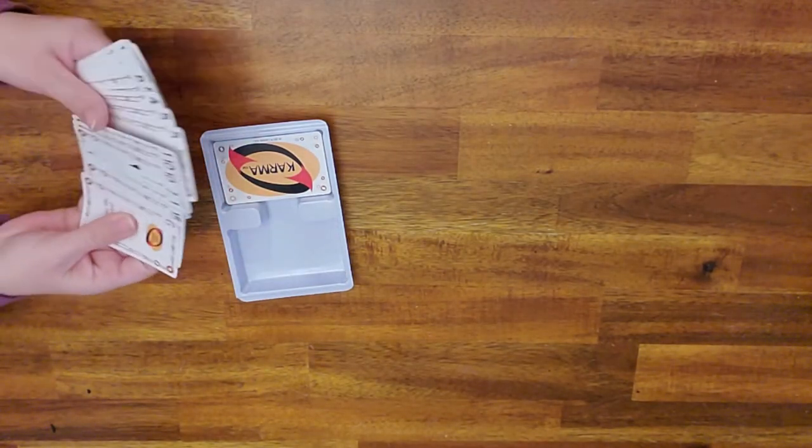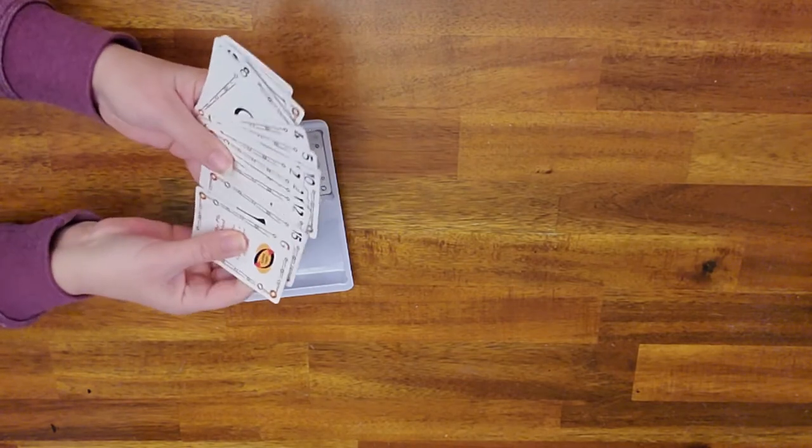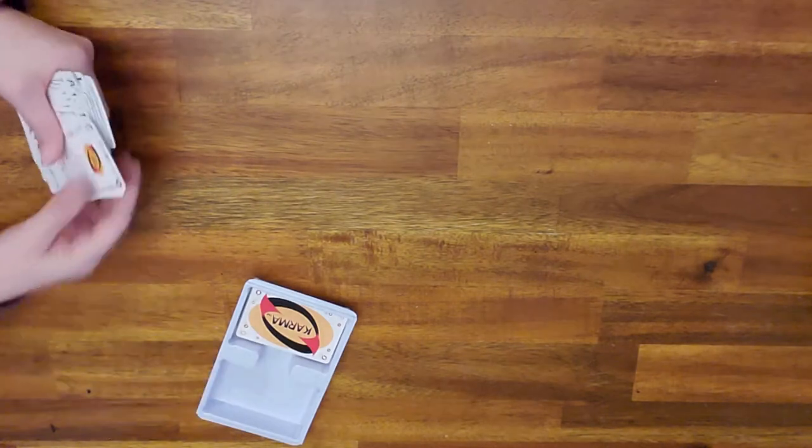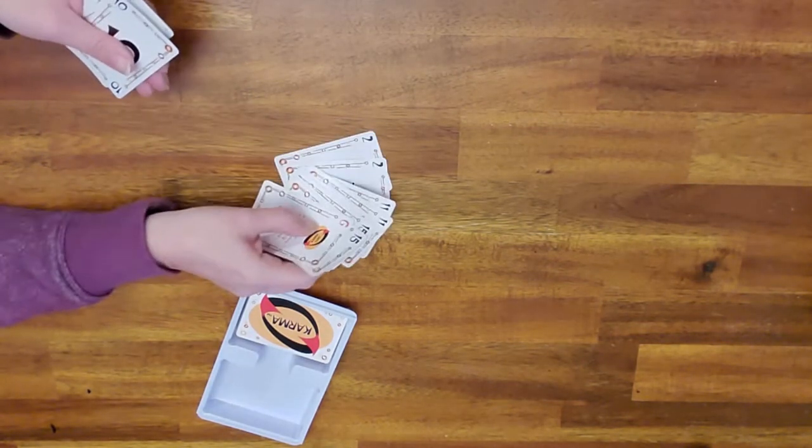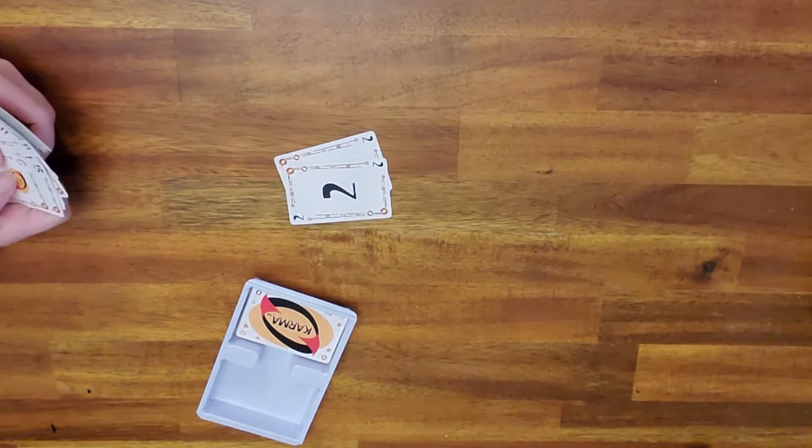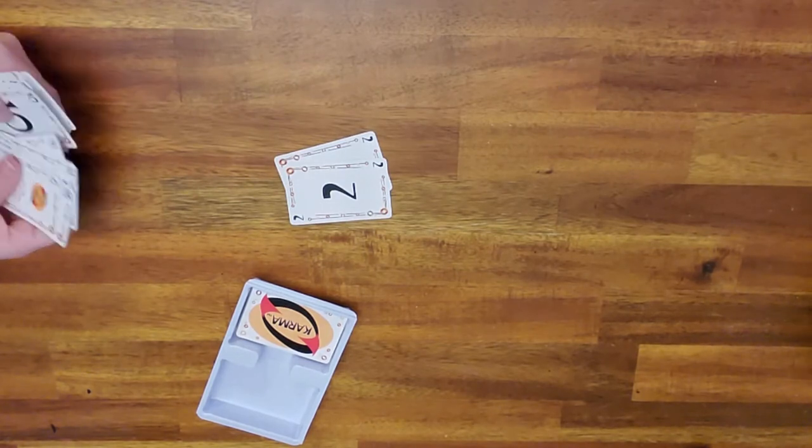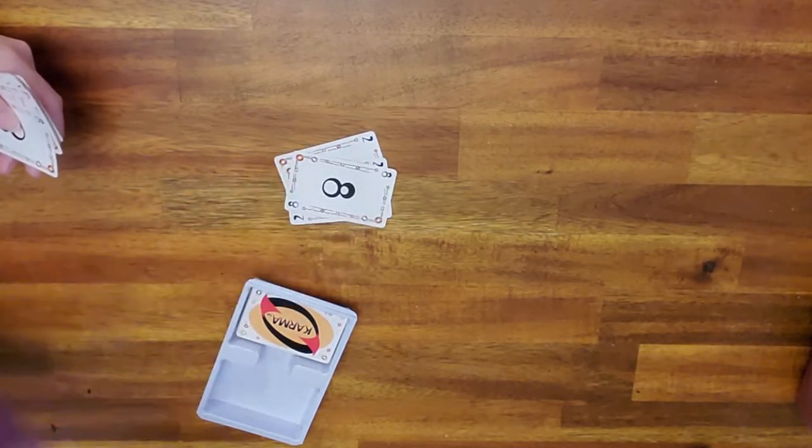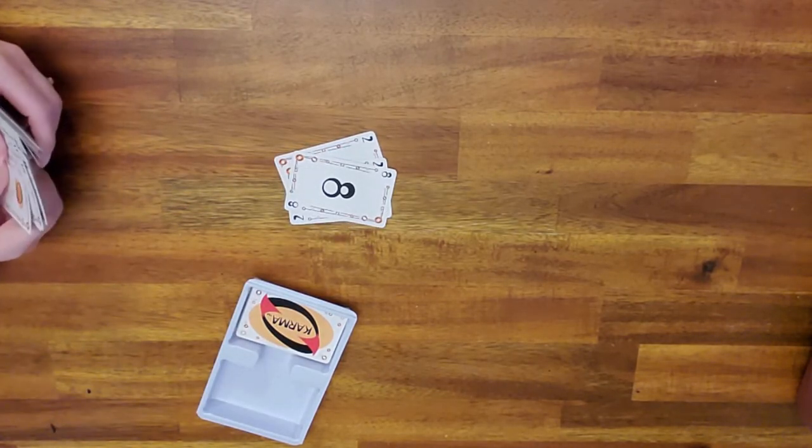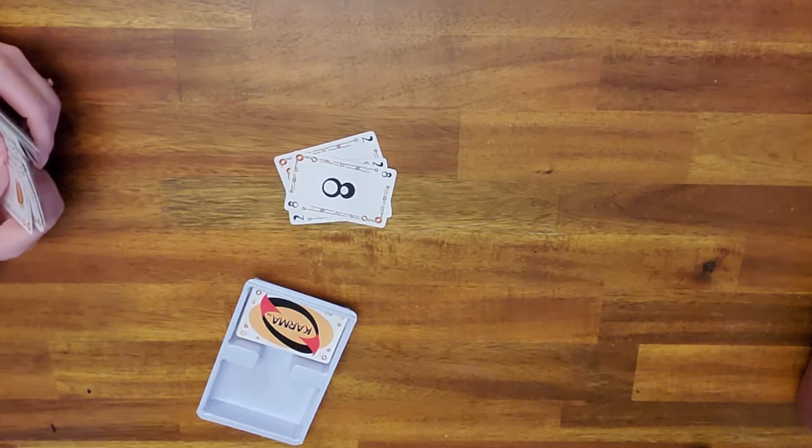The goal is to build up and place higher than the previous player. So if the previous player were to place two twos, you could either place another two or you could place a card higher, so an eight. You don't have to place the same amount of cards, it just has to be the same number or higher.